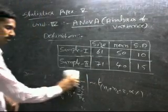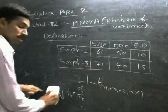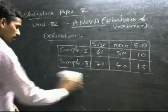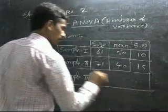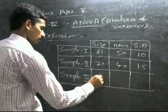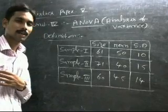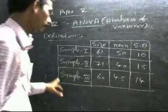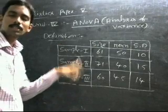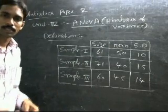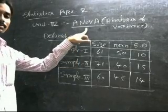Now if we have three samples — for example, sample 3 with size 60, mean 45, standard deviation 40 — and we need to measure the significant difference between three sample means, in such cases t-test for single mean and t-test for two means are not suitable. We need an alternative procedure, which is called ANOVA — analysis of variance.